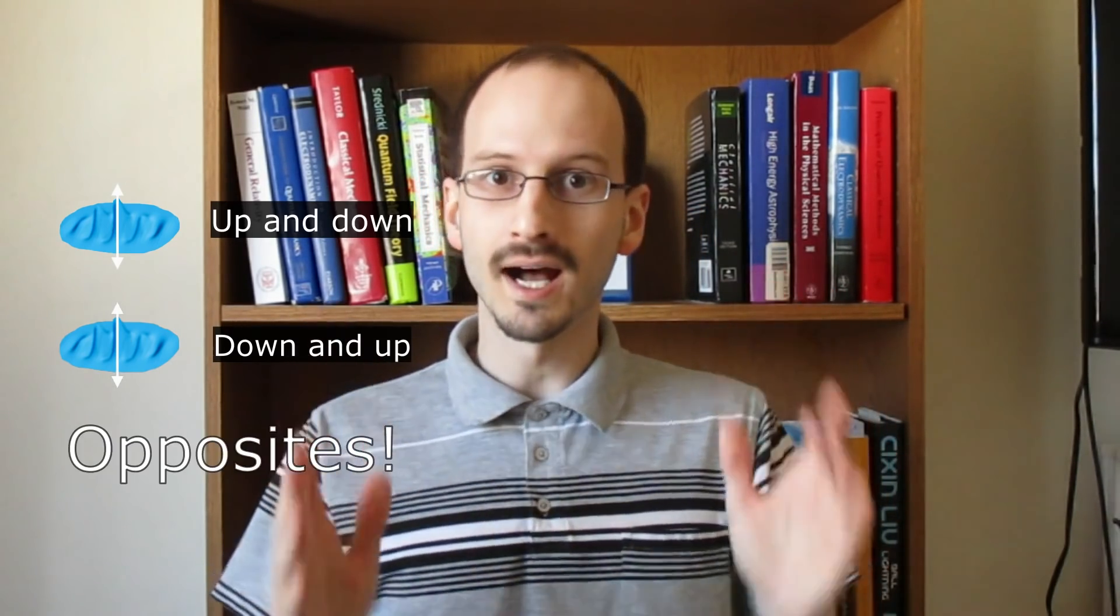Let's look at the classic example. If we get two electrons to become entangled with one another, such as being in the same orbital in the same atom, their spins will be opposite one another. The first electron will be in a superposition of spin up and spin down. The second electron will be in a superposition of spin down and spin up. Even when the electrons are in superposition, they're opposite.